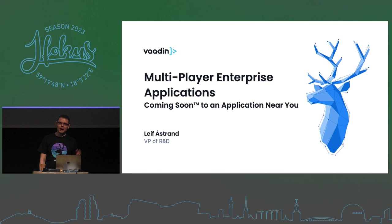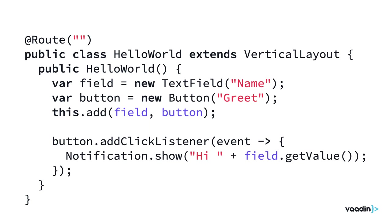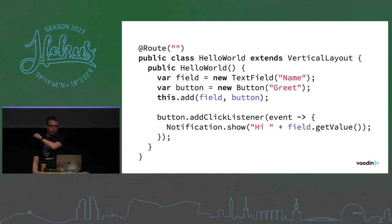My name is Leif, I'm VP of R&D at a place called Vaadin. We've been building open source frameworks for enterprise web applications for 20 years. Our most popular framework is called Vaadin Flow — it lets you build applications using only Java on the server, with components like vertical layouts, text fields, buttons, and click listeners, all running on the server. We also have another framework called Hilla, which connects modern front ends using React or Angular to a Java backend with generated TypeScript definitions.